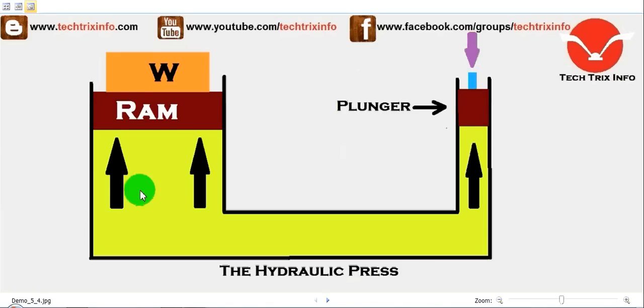The hydraulic press consists of two cylinders. On the left side, we have a larger cylinder with a larger diameter, and here we have a smaller cylinder with a smaller diameter. Both these cylinders have been connected using this pipe in the center, and the cylinders and pipe are filled with hydraulic fluid.